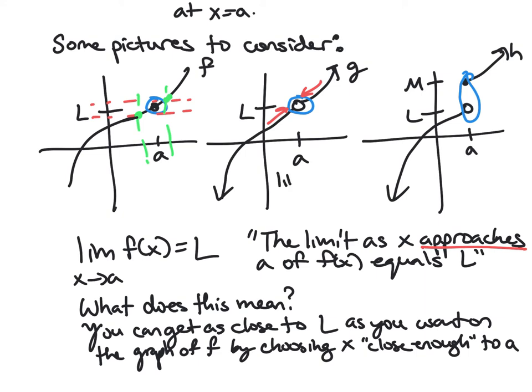And in this case it's the same graph as the one on the left, and so here the limit as x approaches a of g of x is also L.